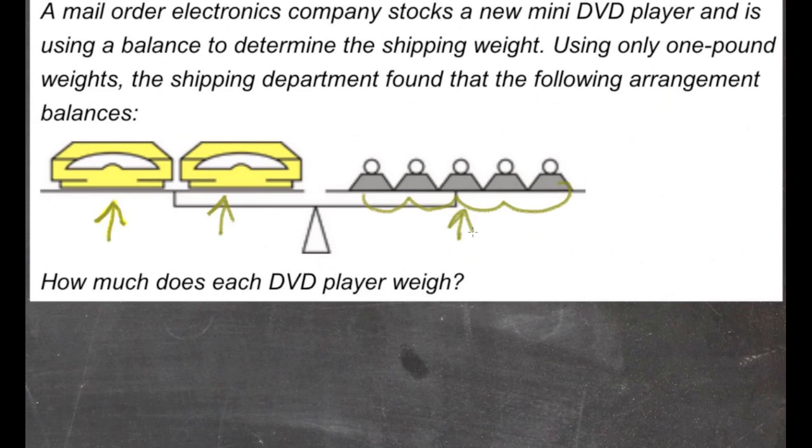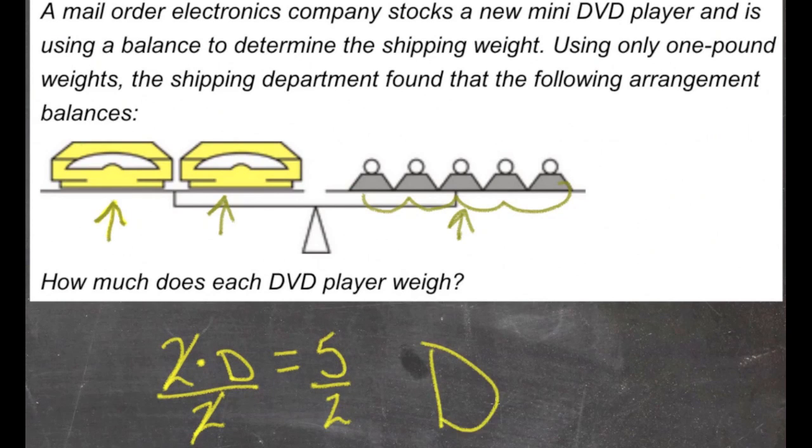So if we take two and set it equal to five, two times whatever the weight of each DVD player is, let's call that D, equals five pounds. So to find the weight of each DVD player, we just need to get rid of this two. Divide both sides by two since we're multiplying at the moment. Five divided by two on this side. We get D equals 2.5. So each DVD player weighs two and a half pounds.